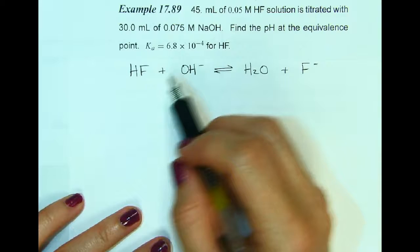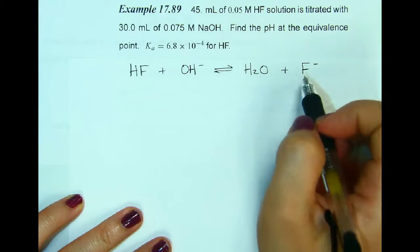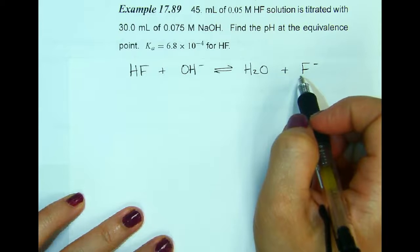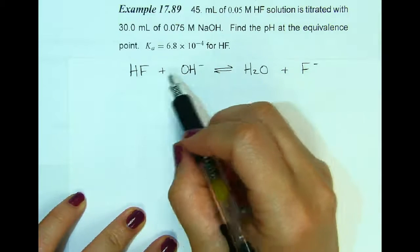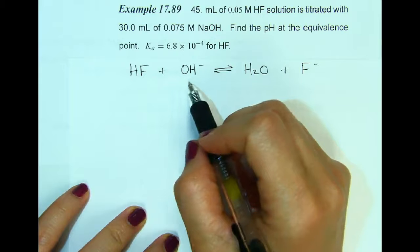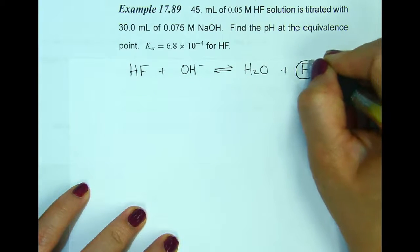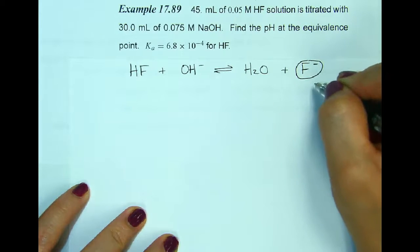So when I react these, the acid transfers the hydrogen over to the hydroxide and we're going to get water and the fluoride ion afterwards. Because this is a weak acid strong base, when these two neutralize with one another, the conjugate base is going to be responsible for the pH at the equivalence point, which is why we're going to expect it to be slightly basic.